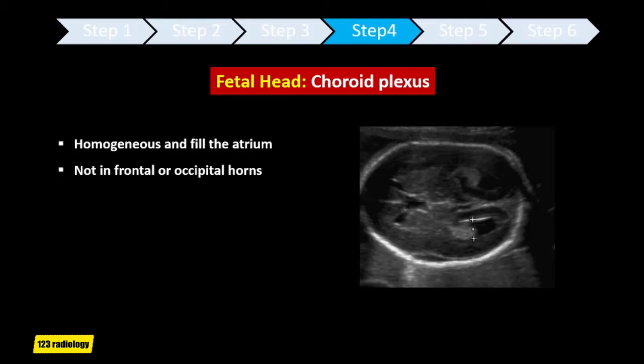Then look at the face. You should see two orbits, one nose and two nostrils, and examine the upper lip for cleft lip. Then go down to the neck — the guideline is to note only if there is a mass or not. Follow the spine from the head to the sacrum in at least two different planes. Look at the skin and vertebral ossification centers, check for any defect or mass, look for regular appearance of the bones for any deformation, and verify intact skin.